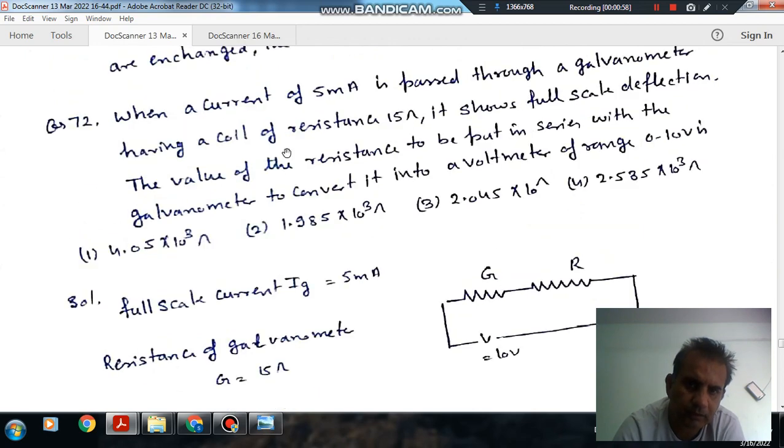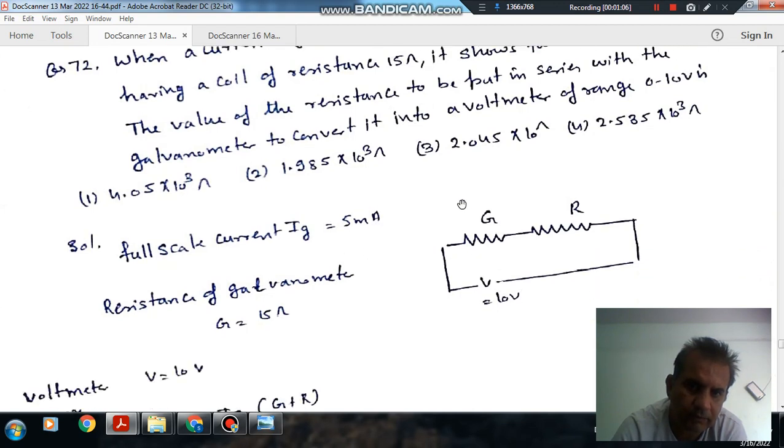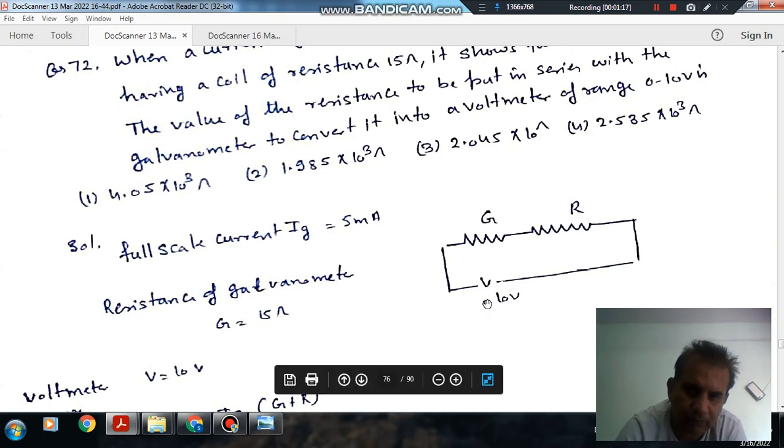So, the full-scale current is 5 milliampere and the galvanometer resistance is 15 ohm. We need to connect a resistance R in series so that it can measure 10 volts.